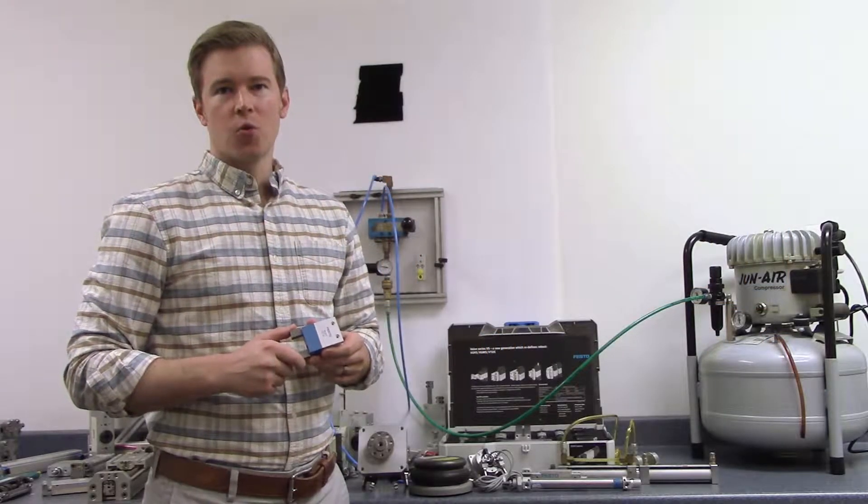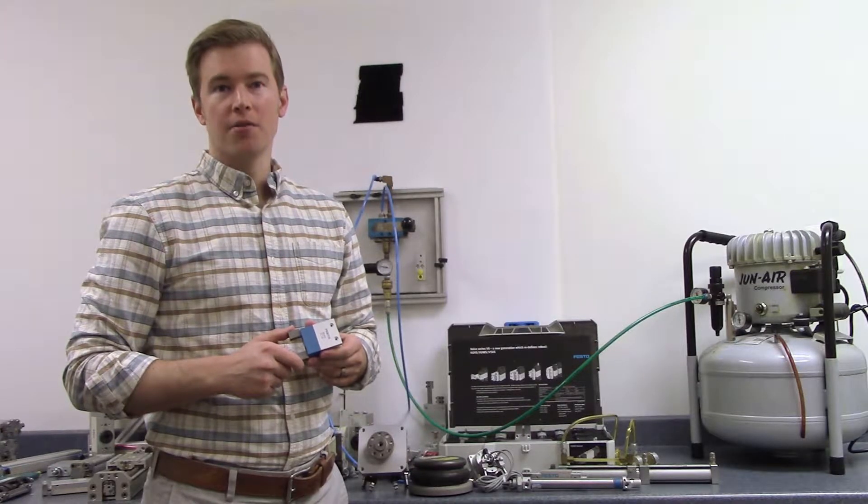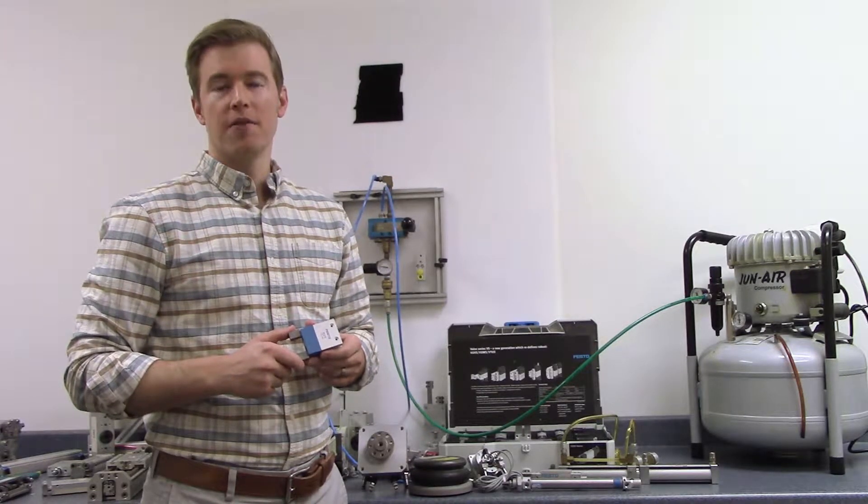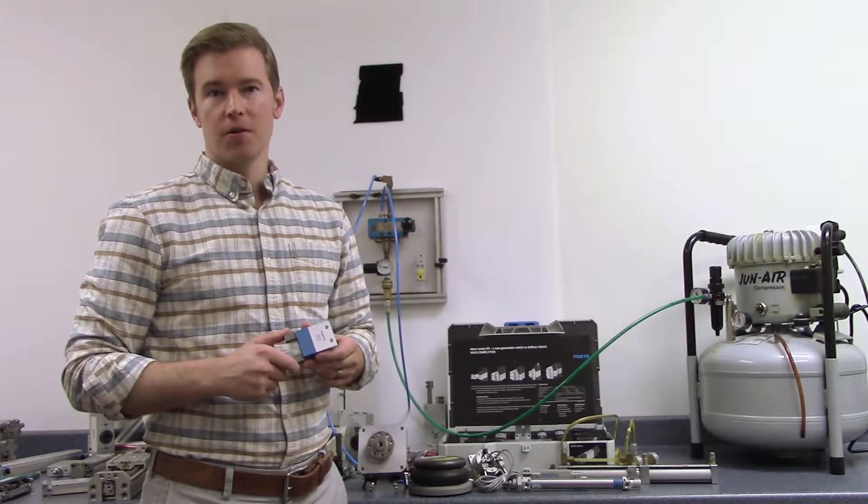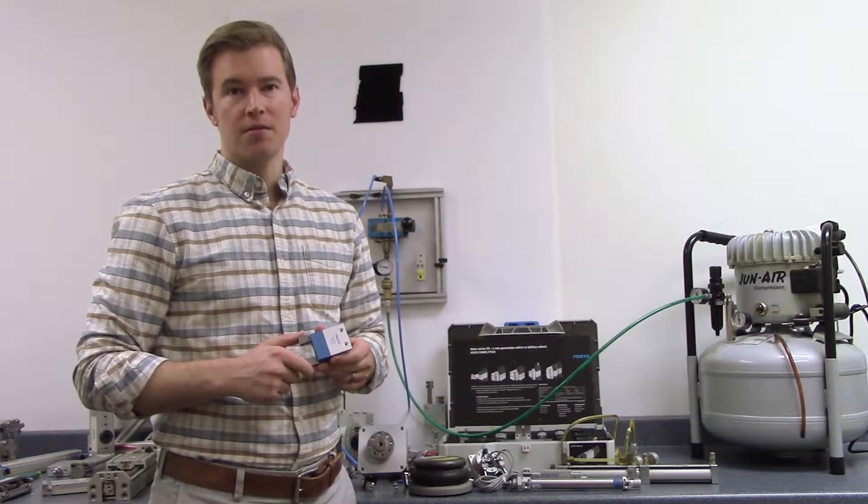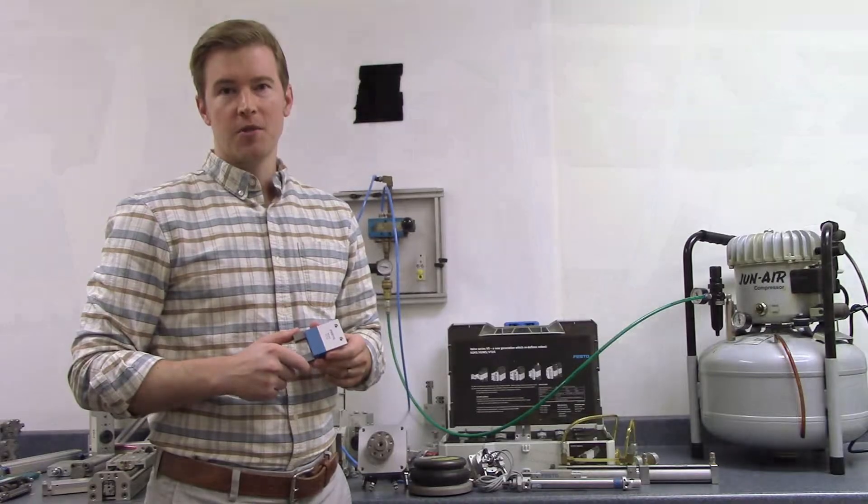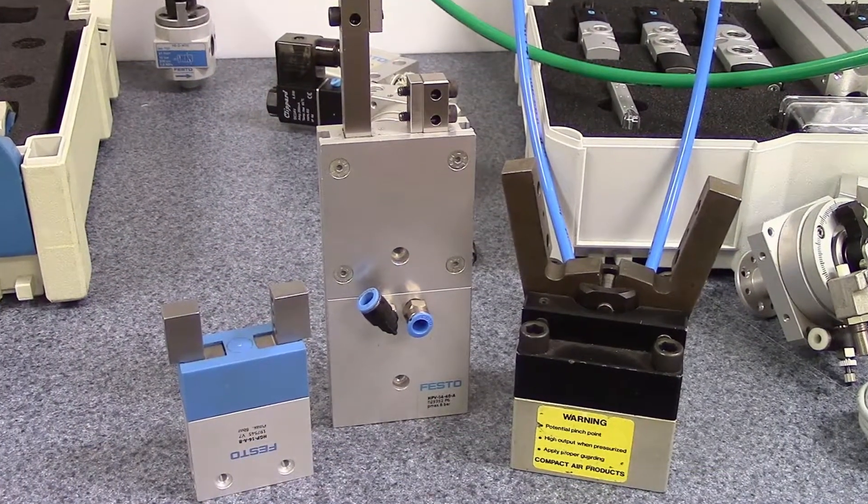In many industrial applications, workpieces cannot remain in one location or orientation during the whole manufacturing process. They have to be picked up, turned, or transported to a new place in a specific way. The most common solution for these situations is a pneumatic gripper.